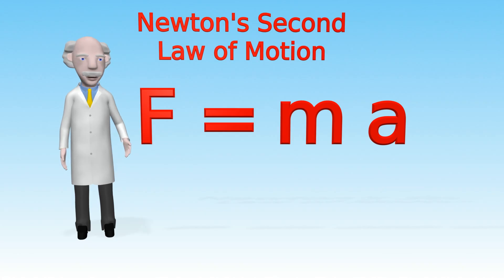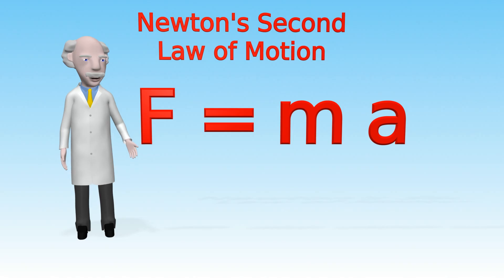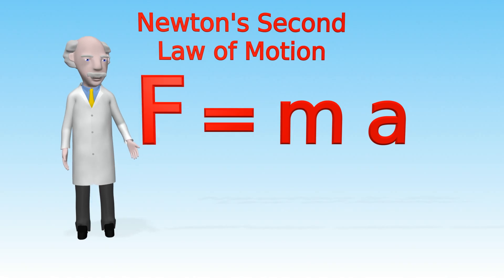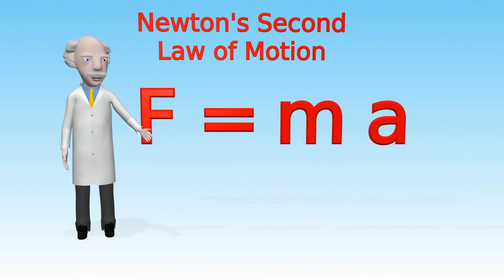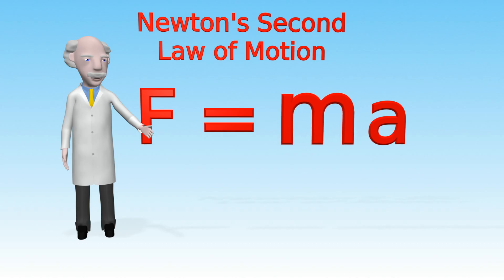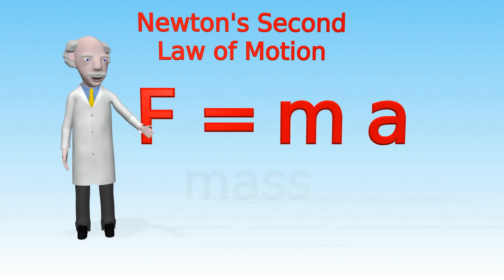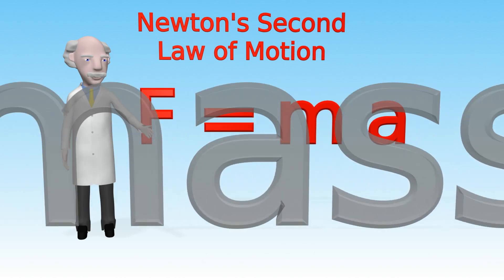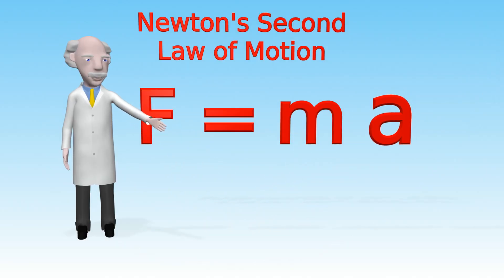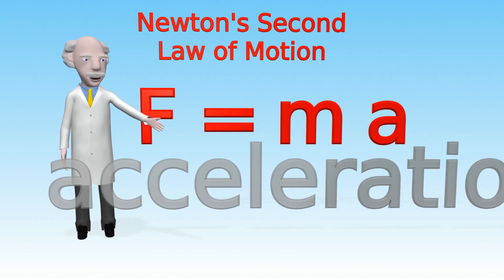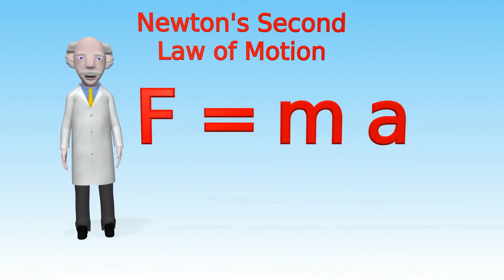So what does the F, the M, and the A stand for? Well, F represents the force on the object. M represents the mass of the object, and A represents the acceleration of the object resulting from the applied force.